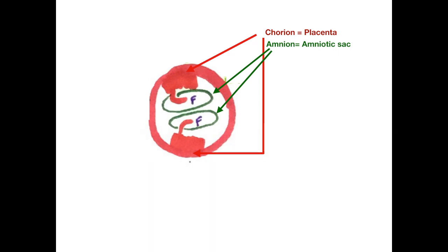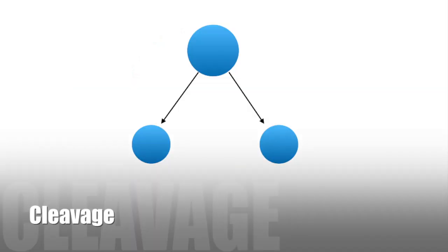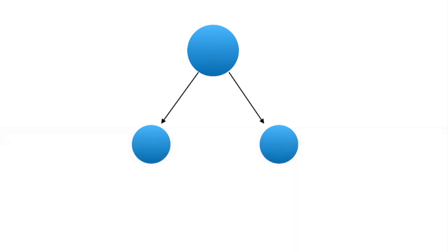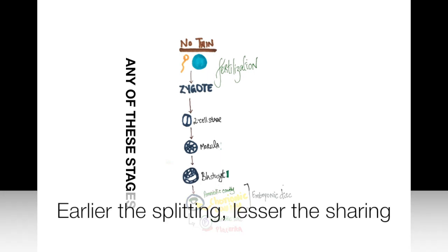So what determines this whole chorionic amniotic sharing not sharing is the cleavage. Cleavage refers to the splitting of one zygote into two separate parts. This can happen in any of these stages. What I want you to remember is that earlier the splitting, lesser the sharing.